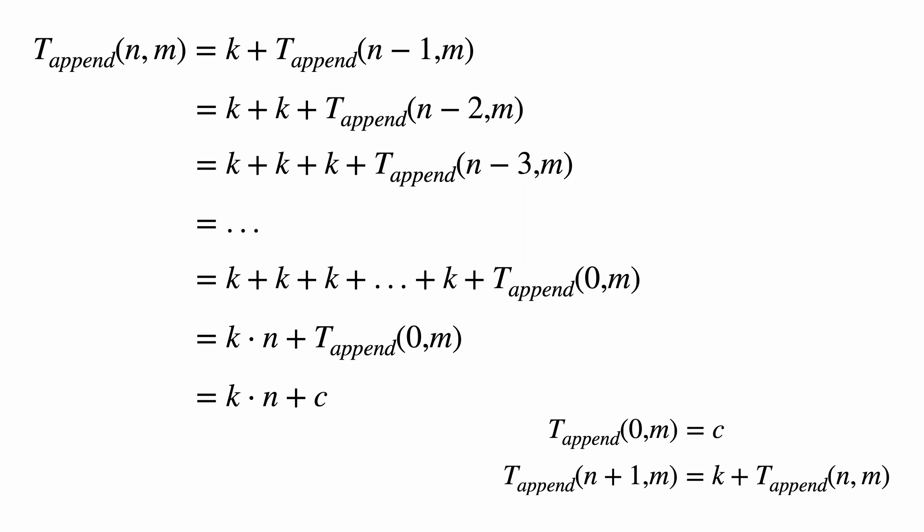So the time it takes to append lists of length n and m is k·n + c, where k and c are both constants. Notice that the time required depends only on n, the size of the first argument, and not on m — that's consistent with what we'd expect since append never looks inside the structure of the second argument. k·n + c is in big O of n, so we can say that append takes time linear in the length of its first argument.